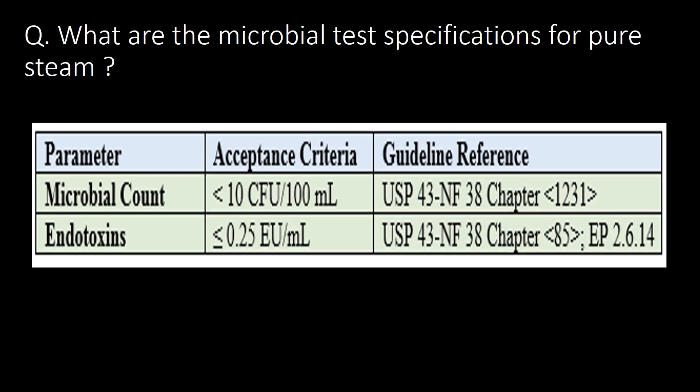What are the microbial test specifications for pure steam? You can refer to the below table for parameter, acceptance criteria, and guideline reference. For microbial count, the limit is less than 10 CFU (colony forming units) per 100 ml. For endotoxins, the acceptance limit is less than or equal to 0.25 EU (endotoxin units) per ml.